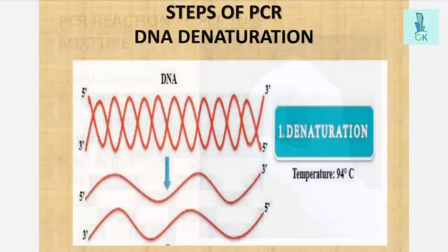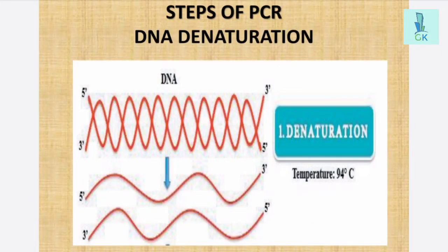The PCR is completed in three steps: number one denaturation, number two annealing, and number three is elongation.